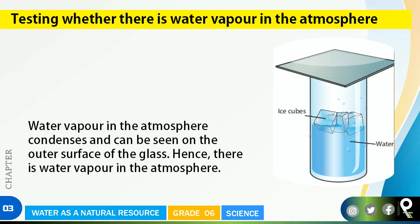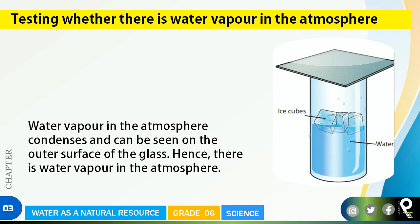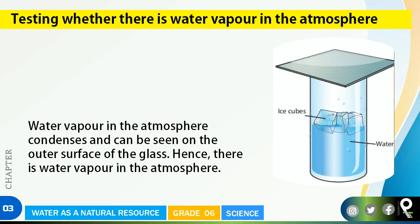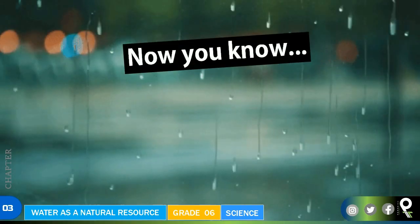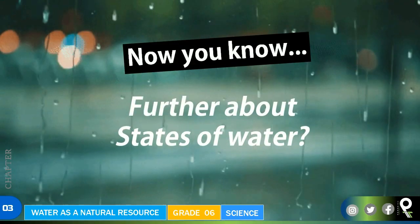Water vapor in the atmosphere condenses and can be seen on the outer surface of the glass — you can see it coming out on top of the glass. I'm animating that for you. Hence, there is water vapor in the atmosphere. Water vapor in the atmosphere condenses and can be seen on the outer surface of the glass, confirming that water vapor exists in the atmosphere.